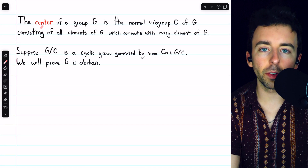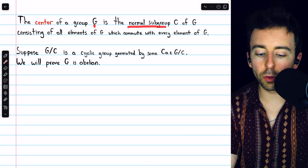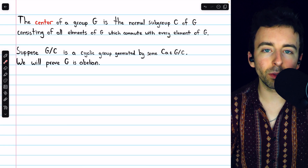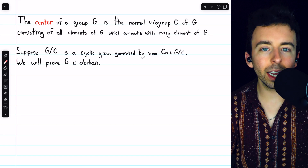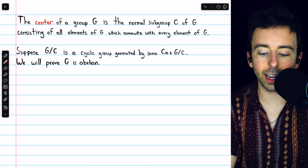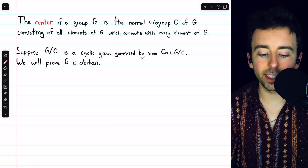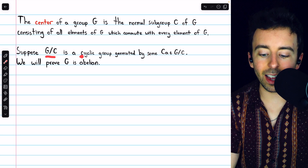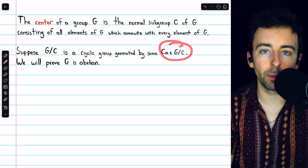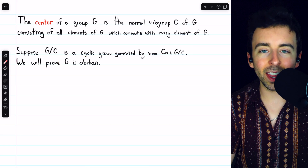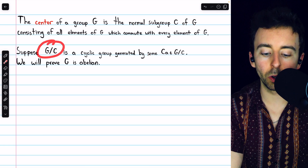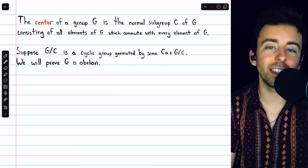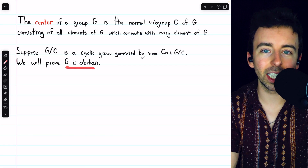Here's one more example involving the center of a group. The center of a group G is the normal subgroup C of G consisting of all elements of G which commute with every element of G — it only contains elements which can be multiplied with the rest of G in any order. I'll leave a link in the description to my lesson going over the center of a group in more detail and proving that it is indeed a normal subgroup. We'll take that for granted here and consider the quotient group of G by C. Now, if G/C is a cyclic group generated by some coset from the quotient group, then it follows that G is abelian. We'll prove that now.